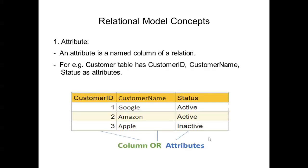Now there are different concepts under the relational model. The first one is attribute. Attribute is the named column of a relation. As we know, the table is a collection of columns and rows, and every column is going to have some name — that name is considered the attribute. For example, this table has three columns and the names given are customer ID, customer name, and status. So this customer table has customer ID, customer name, and status as its attributes.